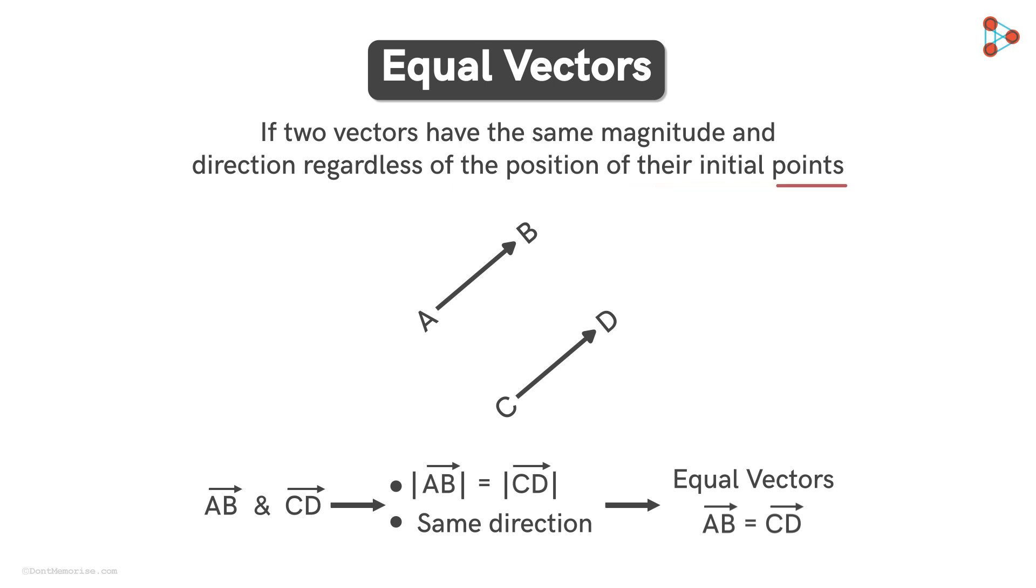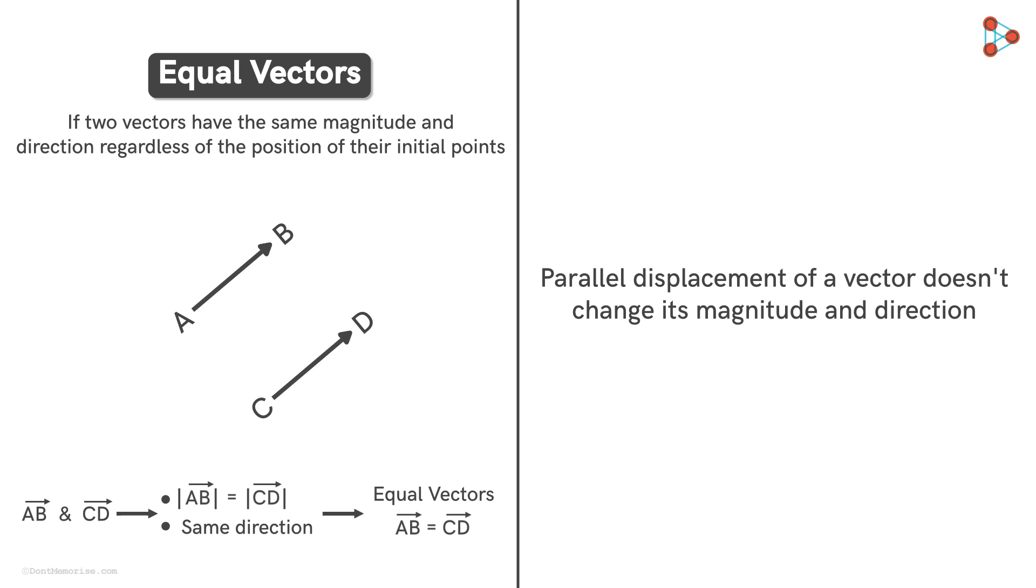Notice this important point. It tells us that it is insignificant where the initial points of the vectors are if they are equal to each other. So according to this, we can move a vector parallel to its position without affecting its magnitude and direction.